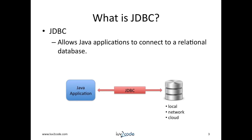JDBC allows a Java application to connect to a relational database. The major databases are supported, such as Oracle, Microsoft SQL Server, DB2, MySQL, and many others. The database can be located on the same local machine as the application, on a network in a remote location, or deployed in the cloud. JDBC can still give you a connection to the database regardless of the location.